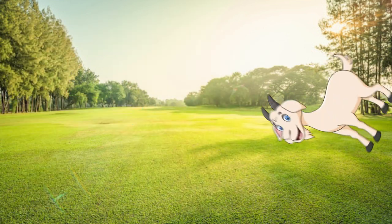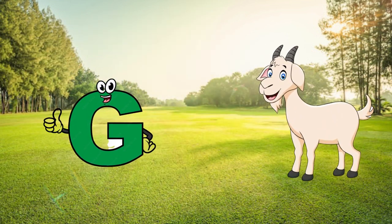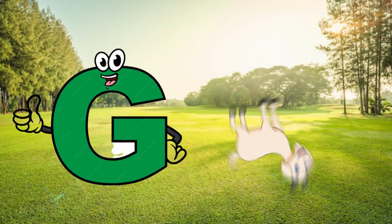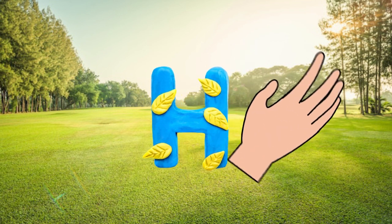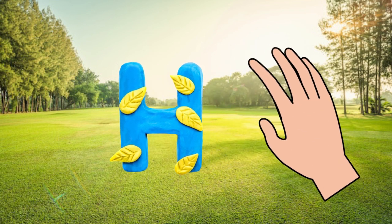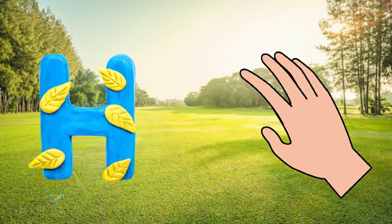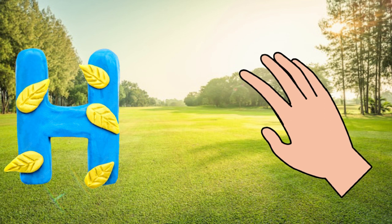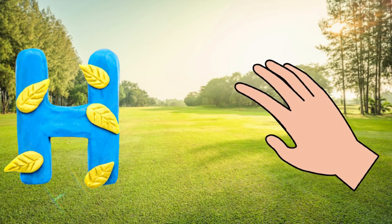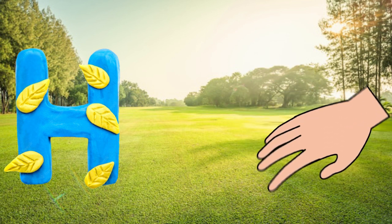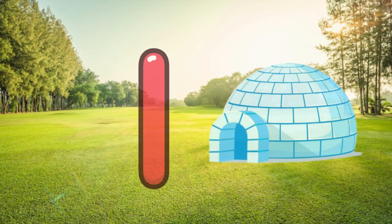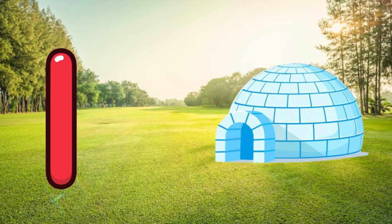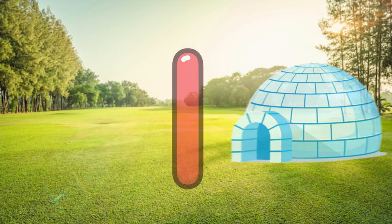G is for goat, g-g-goat. H is for hand, a-a-hand. I is for igloo, i-i-igloo.